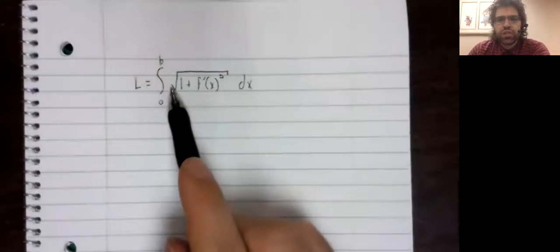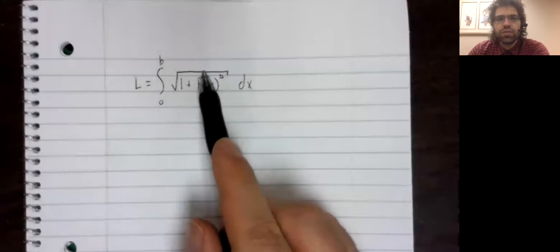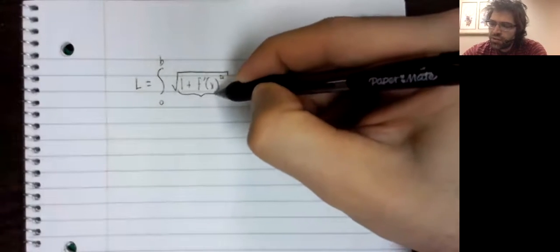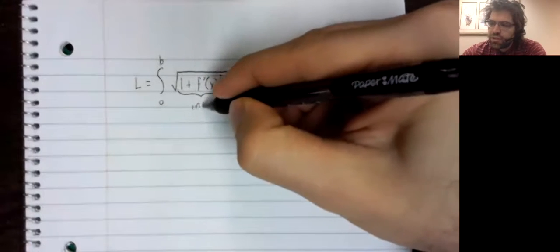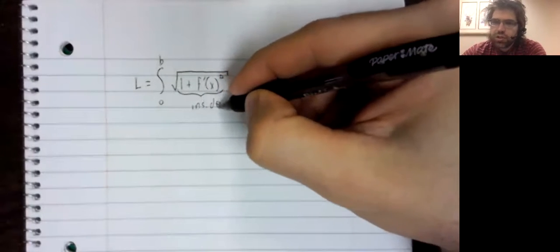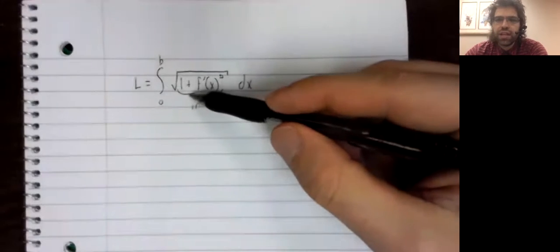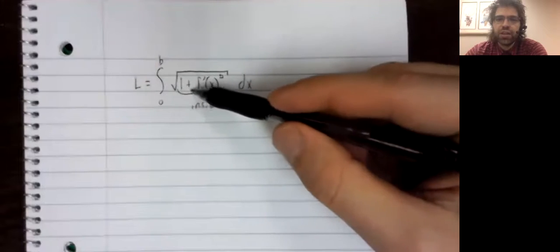This is a composition. The square root function is the outside function. This is the inside function. We only have one method for taking the integral of a composition, and that is u-substitution. But to use u-substitution,